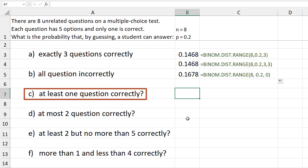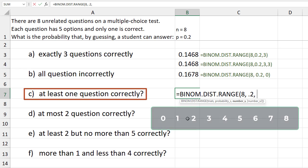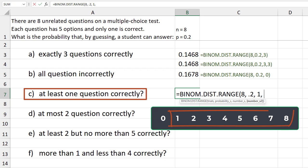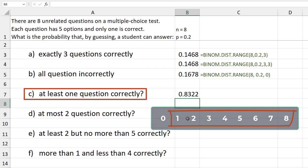For c, at least one question correctly means we have a lower limit of 1 and an upper limit of the maximum possible, which is 8.